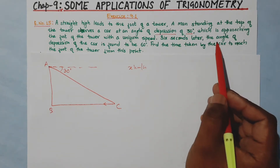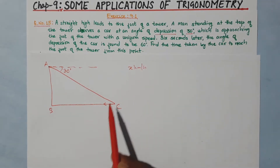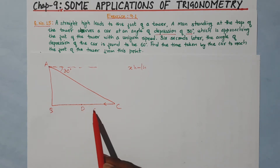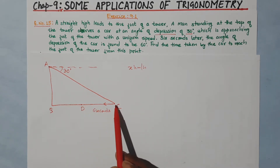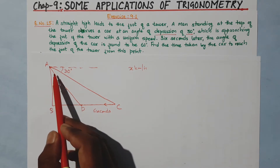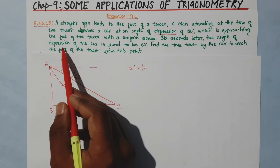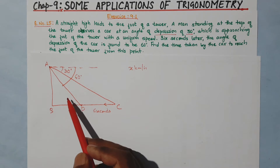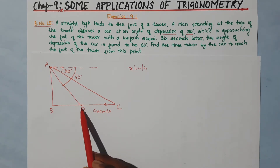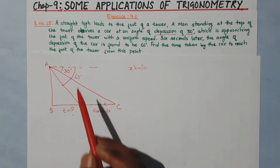Six seconds later, the angle of depression of the car is found to be 60 degrees. After six seconds, the car has moved to position D. The observer at the top of the tower now sees the car at an angle of depression of 60 degrees. We have to find the time taken by the car to reach the foot of the tower from this point.